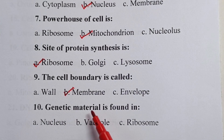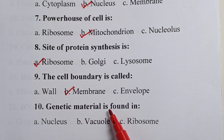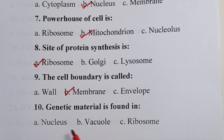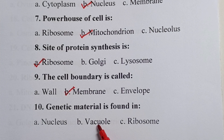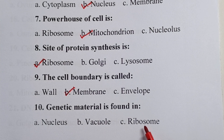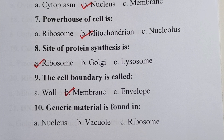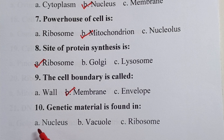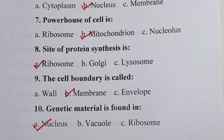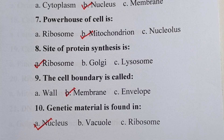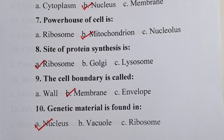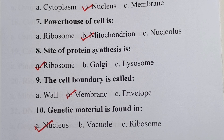Question ten: genetic material is found in — is it nucleus, vacuole, or ribosome? Your correct answer is nucleus. Chromosomes and DNA are all found in the nucleus.